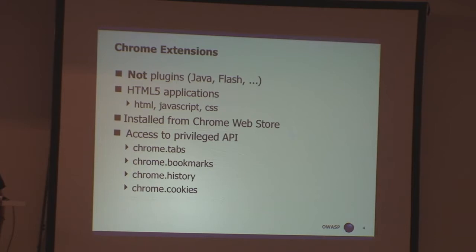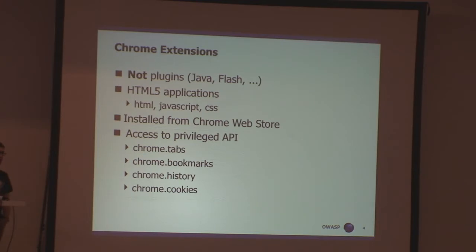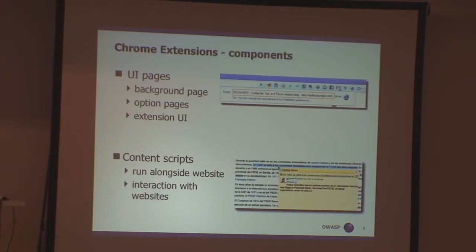Some Chrome extensions can, for example, totally bypass the same-origin policy for the website that you are visiting. They can access the contents of your tabs, modify the DOM of web pages you're visiting, access your browsing history, your cookies, your bookmarks, and so on. This is why they are really interesting — they are much more powerful than usual HTML applications. And as it turns out, they have similar vulnerabilities because they are all written in JavaScript.